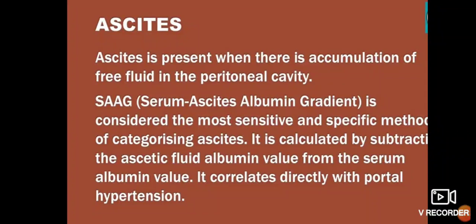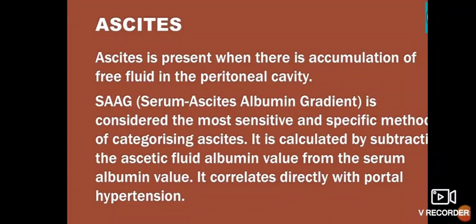Remember SAAG — Serum Ascites Albumin Gradient — is considered the most sensitive and specific method of categorizing ascites. It is calculated by subtracting the ascitic fluid albumin value from the serum albumin value. It correlates directly with portal hypertension.